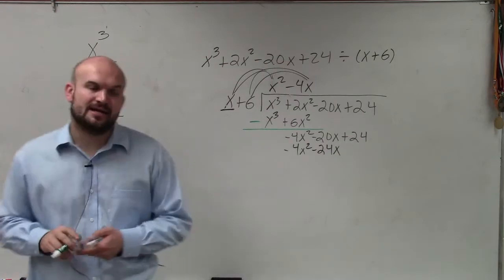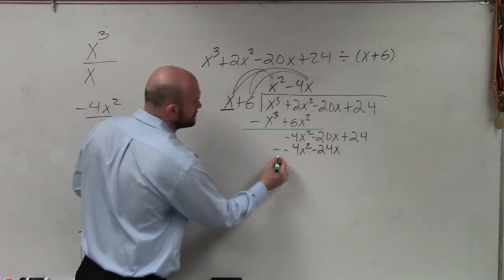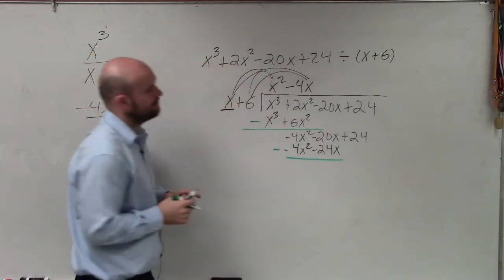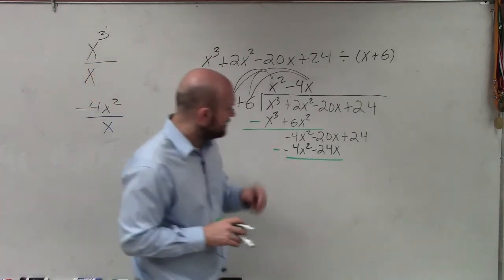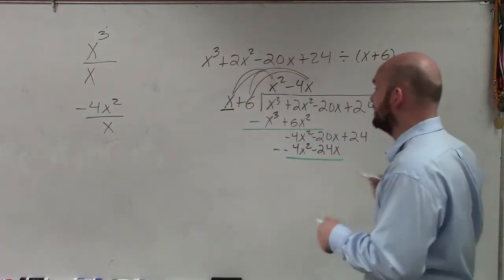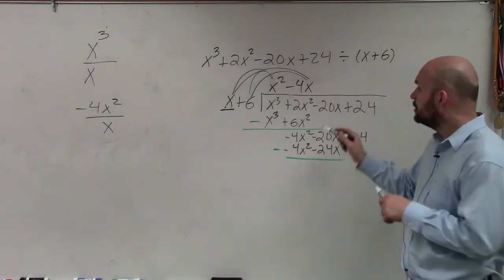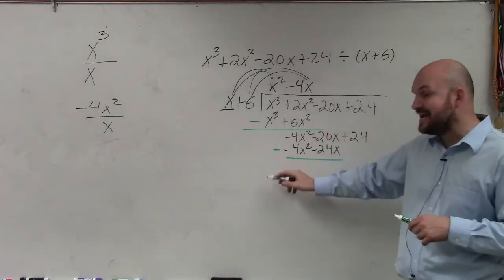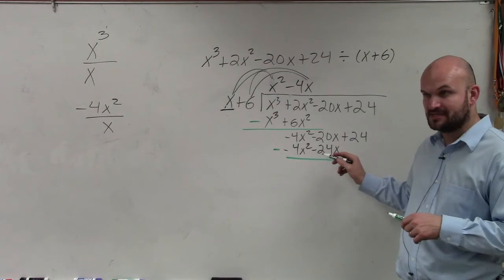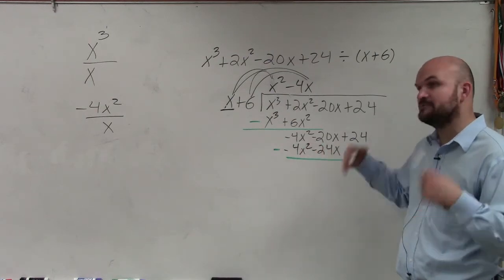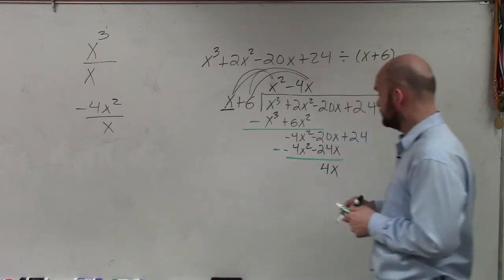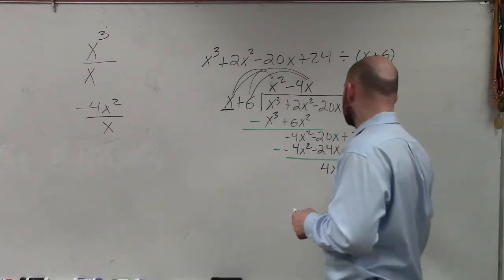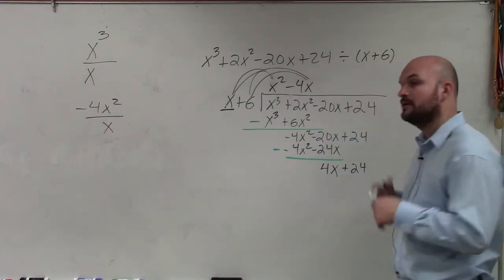Again, we apply, we subtract the rows. So negative 4x squared minus a negative 4x squared goes to 0. Negative 20x minus a negative 24x is going to become a double negative, which returns positive. So we actually get a positive 4x, and then bring down the 24.